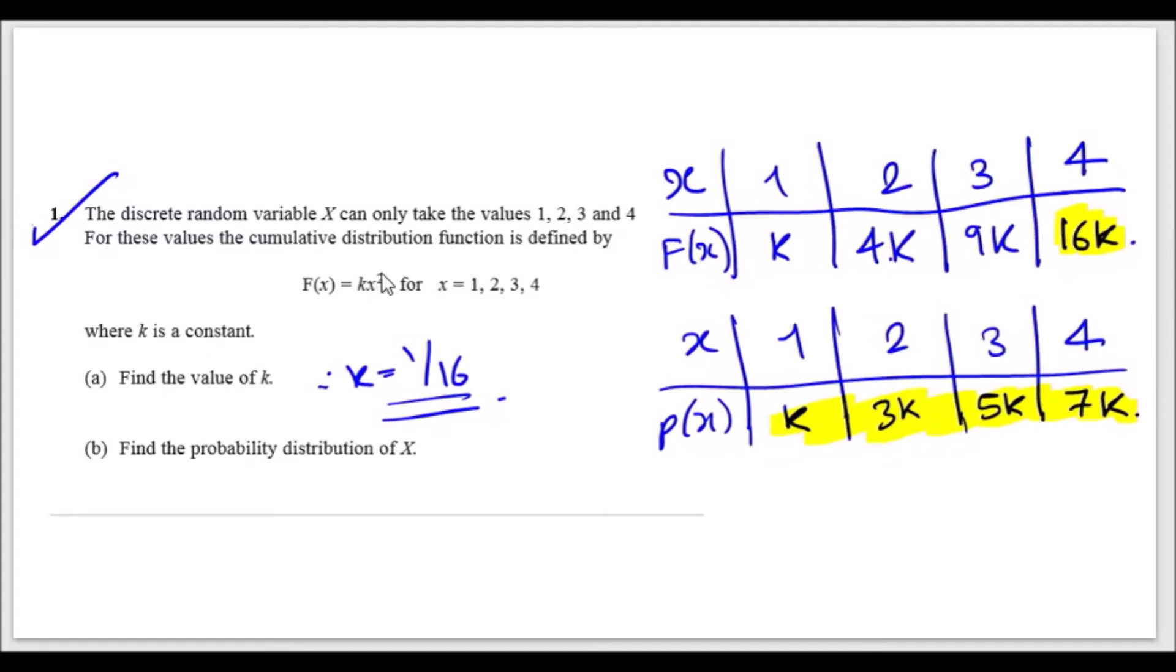For example, when x is 1, you have k times 1 squared, which gives you k. Plug in 2, you get 2 squared which is 4, so you get 4k, and so on, and eventually you get up to 16k.